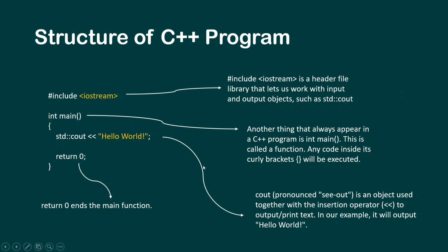Now let's look at the structure of a C++ program — a simple Hello World program. The first line is `#include <iostream>`, which is a header file library that lets us work with input and output objects such as `std::cout`. iostream stands for input/output stream. The next part is `int main()`, which is a function — any code inside its curly brackets will be executed.